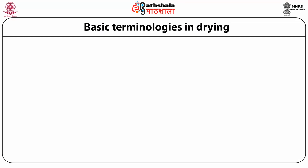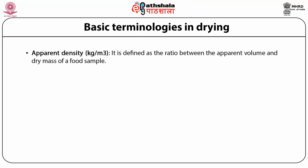The next property is apparent density, which is defined as the ratio between the apparent volume and the dry mass of a food sample. Apparent density can be expressed in kilograms per cubic meter and depends on the form of particle, the composition of a substance, and the method of storage. The volume taken by the product includes void space.